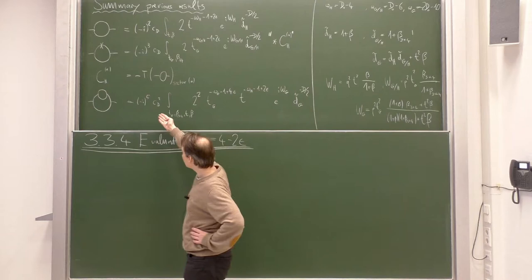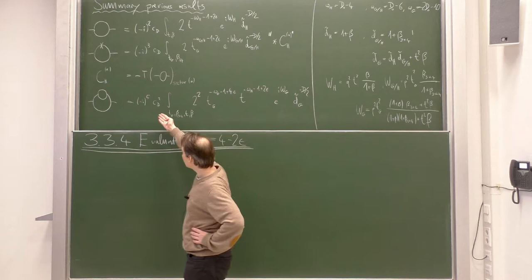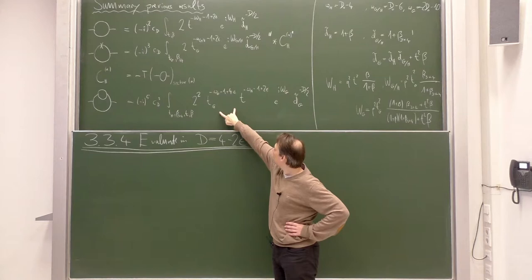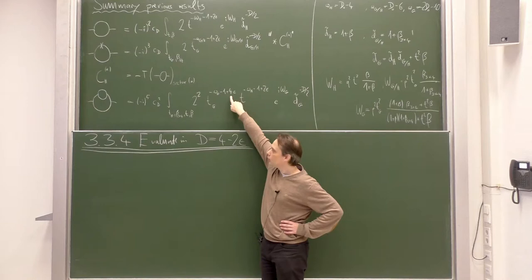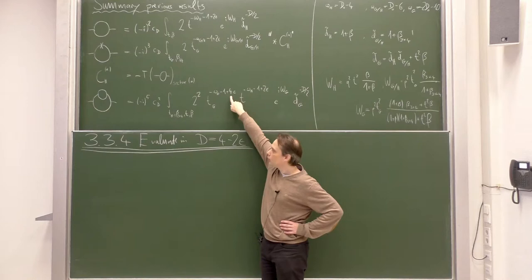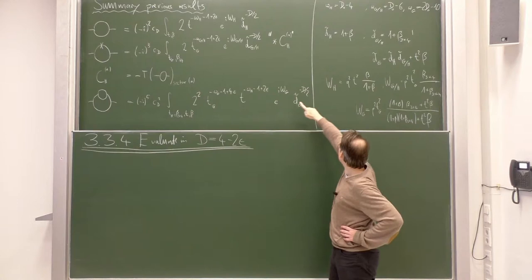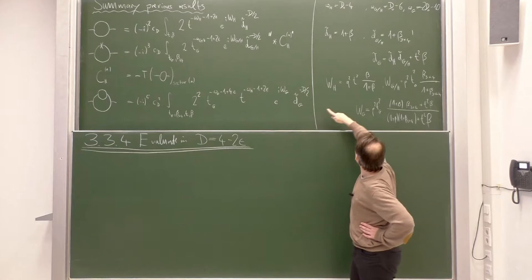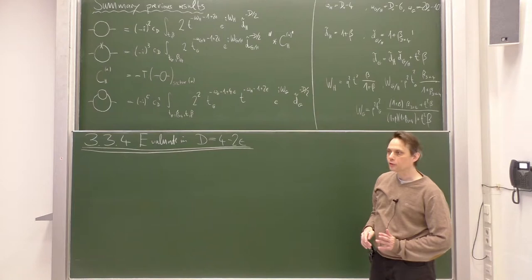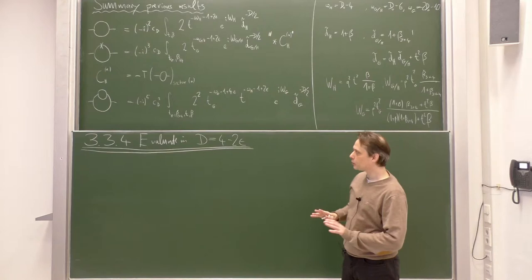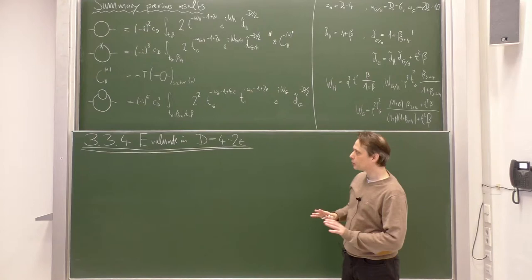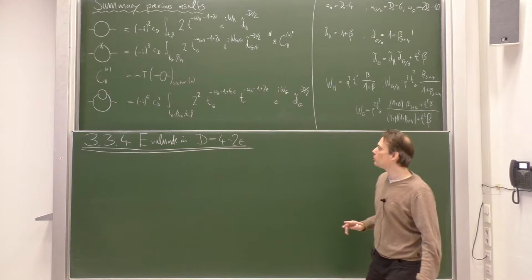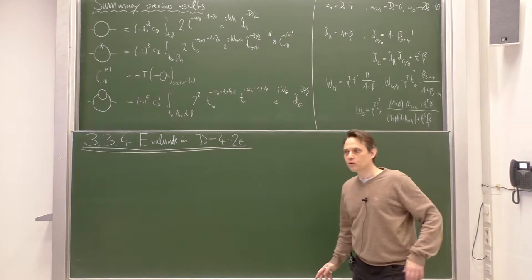The next integral is for the counterterm Feynman diagram with an insertion. Forgetting the insertion for the moment, we have minus i cubed because of three propagators, times the loop factor, times an integral over three variables: one variable t_g for the overall graph and two betas. We have the factor t_g to the appropriate power given by power counting of that counterterm graph minus one plus two epsilon, times the exponential function and the d-tilde term. The full two-loop diagram integral has five propagators, two t variables with four epsilon and two epsilon respectively.